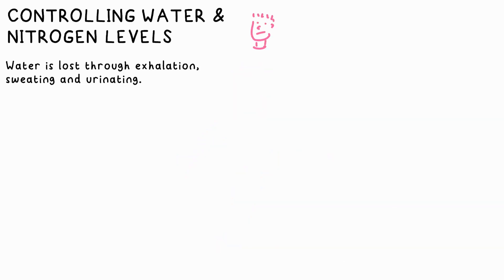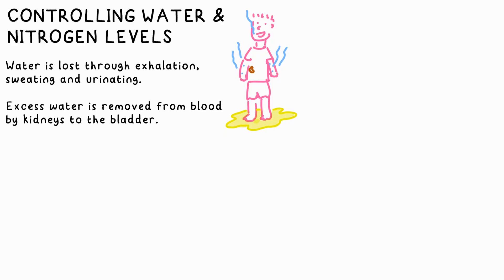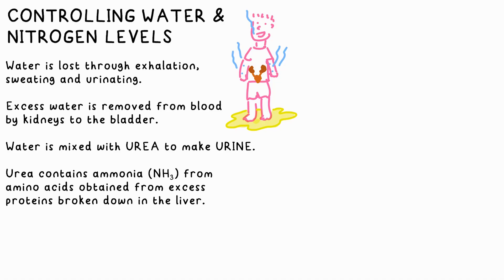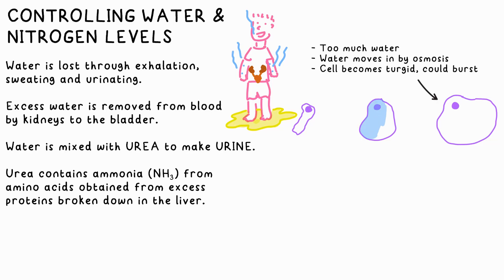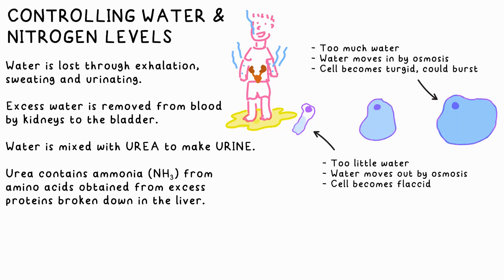Your body loses water when you exhale, sweat or urinate. If your body has too much water — say for example you drink too much — your kidneys remove it from your blood at a faster rate, where it's mixed with urea to become urine. Urea contains ammonia, which is produced from excess proteins broken down into amino acids by the liver. Kidneys do a good job of keeping the water balance just right.